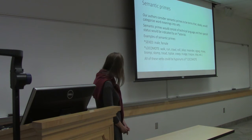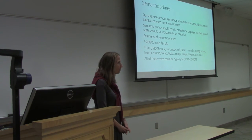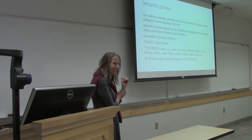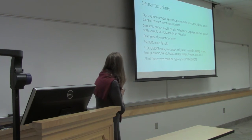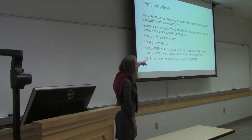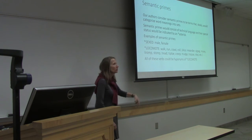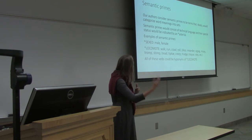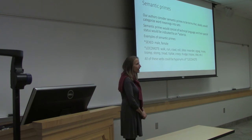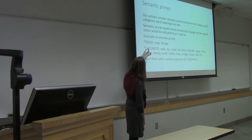Examples of semantic primes suggested in the chapter include sex — male versus female, and perhaps neuter, since carrots don't have gender — and locomote, which indicates a change of location from one place to another. Locomote is the semantic primitive underlying verbs like walk, run, crawl, roll, stomp, tread, tiptoe, creep, trudge, and many others.